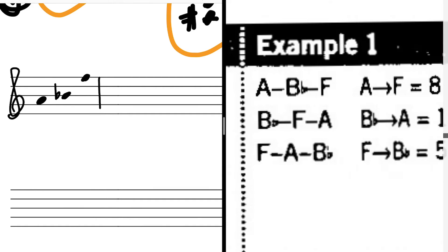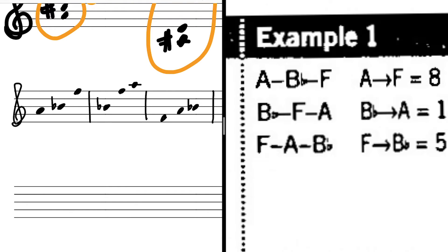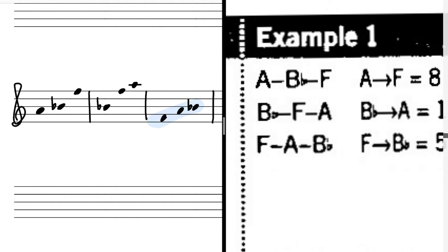So that's one ascending ordering of those pitches. But we have to consider all the rotations of this ascending form. So we're also going to consider B flat, F, A. And we're also going to consider F, A, B flat. I hope you can easily recognize which one of these formations of A, B flat, F is the smallest. It's this one, right? This one only spans a perfect fourth, whereas the first one spans a minor sixth, and the second spans a major seventh. So F, A, B flat is the most compact form, and that's our normal form.